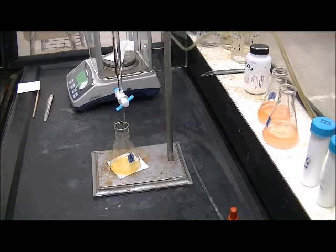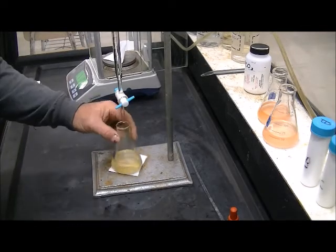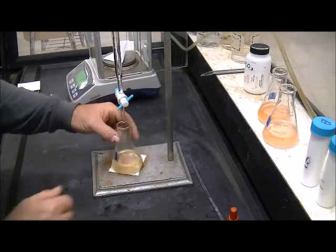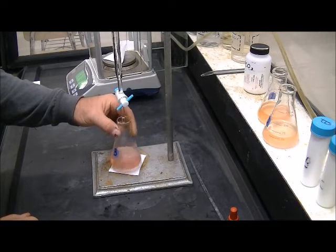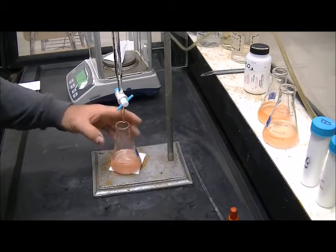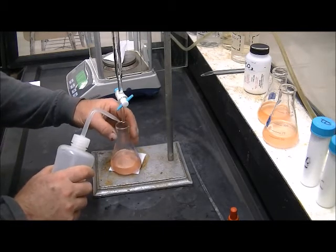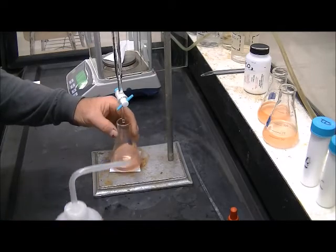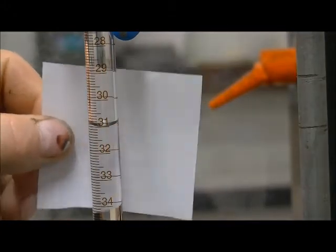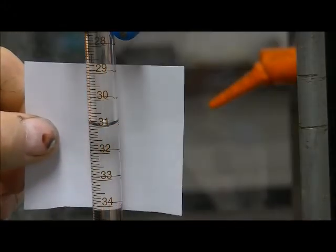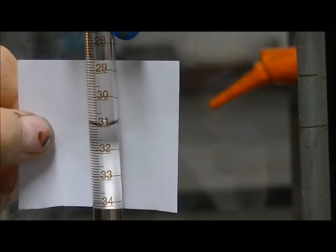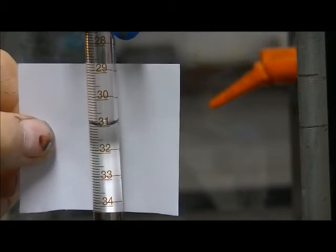This is sample three of unknown A. That looks like an end point there. Make sure everything is down in there in the reactor area. And the end point measurement is 31.0. Right on the 31 line. So I'm going to write down 31.0.